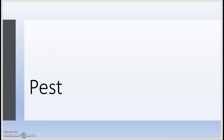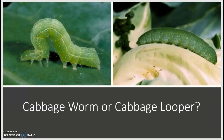Now lettuce is commonly attacked by a worm called the cabbage worm, but sometimes it can be mistaken for the cabbage looper. So before we go on to what damage the cabbage worm does, we should differentiate the two. In this picture, at first glance you may not be able to tell which is which, or maybe from the name cabbage looper you may be able to identify which is the cabbage looper.